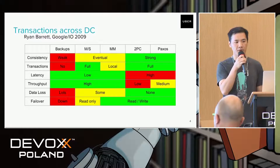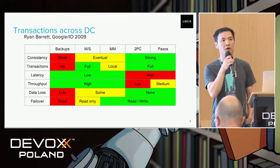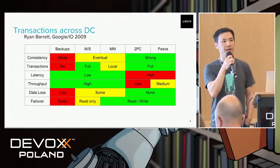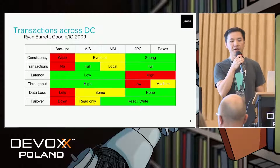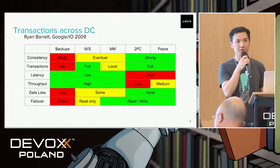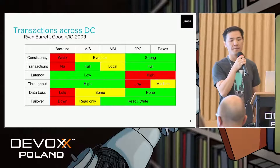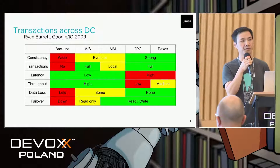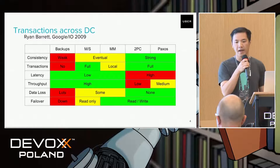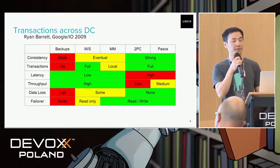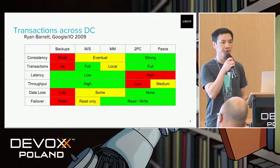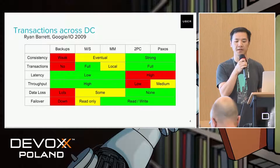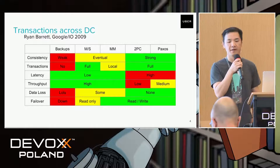Before we discuss our solution, we want to briefly discuss some of the challenges for transactions across multiple data centers. I quoted this table from a tech talk by Ryan Brett at Google I/O 2009. He listed five different approaches for transactions across multiple data centers, including backups, master-slave, master-master, two-phase commit, and Paxos, and he compares these different approaches across different metrics. As you can see, two-phase commit and Paxos provide strong consistency and full transactions, but they are not very good in terms of performance — the latency is higher and the throughput is not that good.